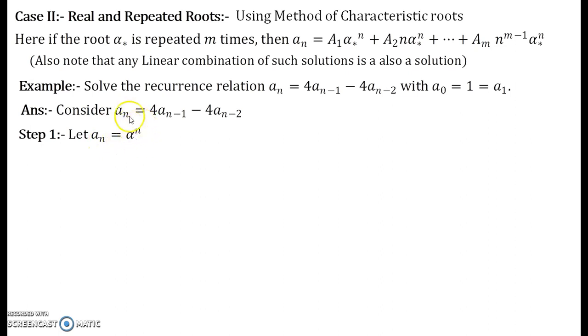I once again recall what will happen to a suffix n minus 1. It will become alpha to the power n minus 1. A suffix n minus 2 will become alpha to the power n minus 2. So I have this expression instead of my recurrence relation now getting converted into α^n equal to 4 times α^{n-1} minus 4 times α^{n-2}.